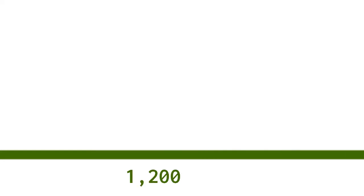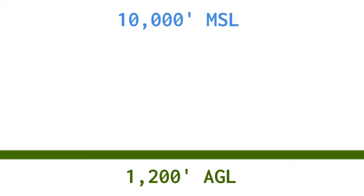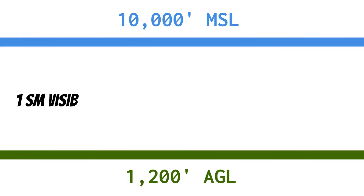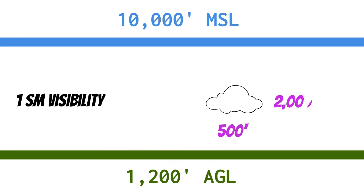There is a chance you might find yourself in Class Golf airspace above 1,200 feet AGL, but below 10,000 feet MSL. If this happens, you only need one statute mile visibility, but you need the same cloud clearances as Echo: stay 500 feet from the bottom, 2,000 feet from the sides, and 1,000 feet from the tops.